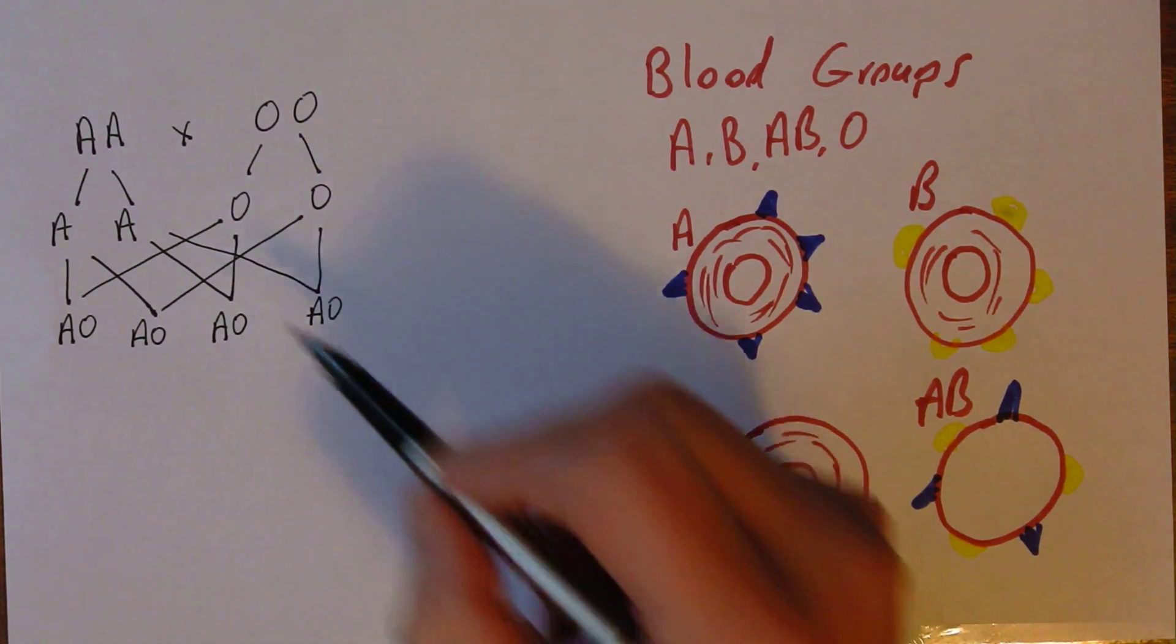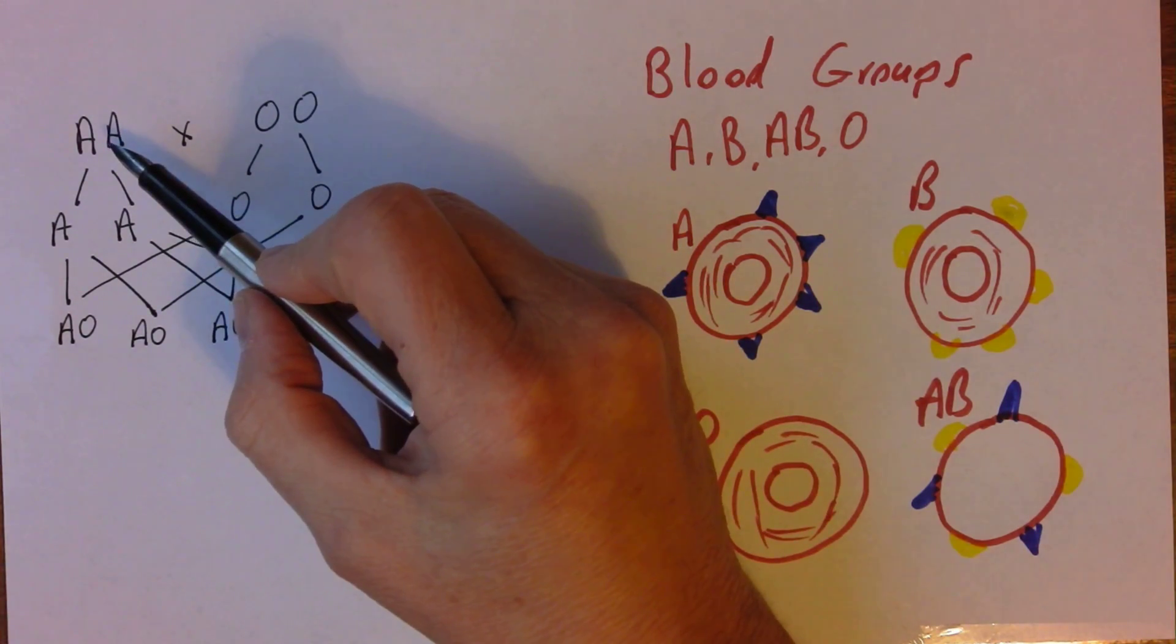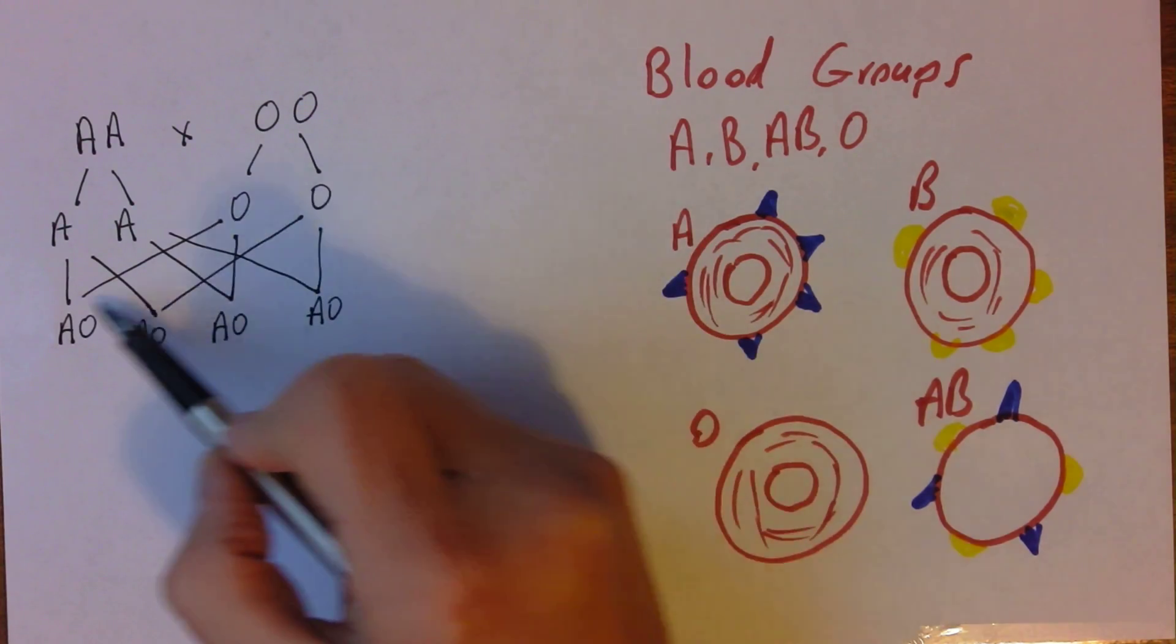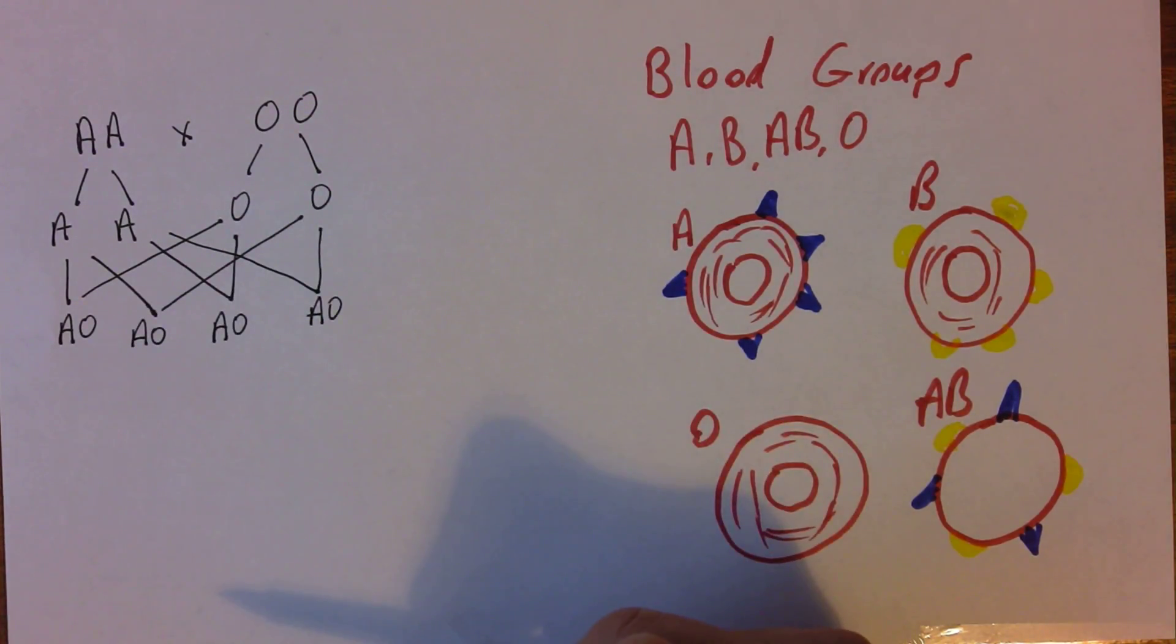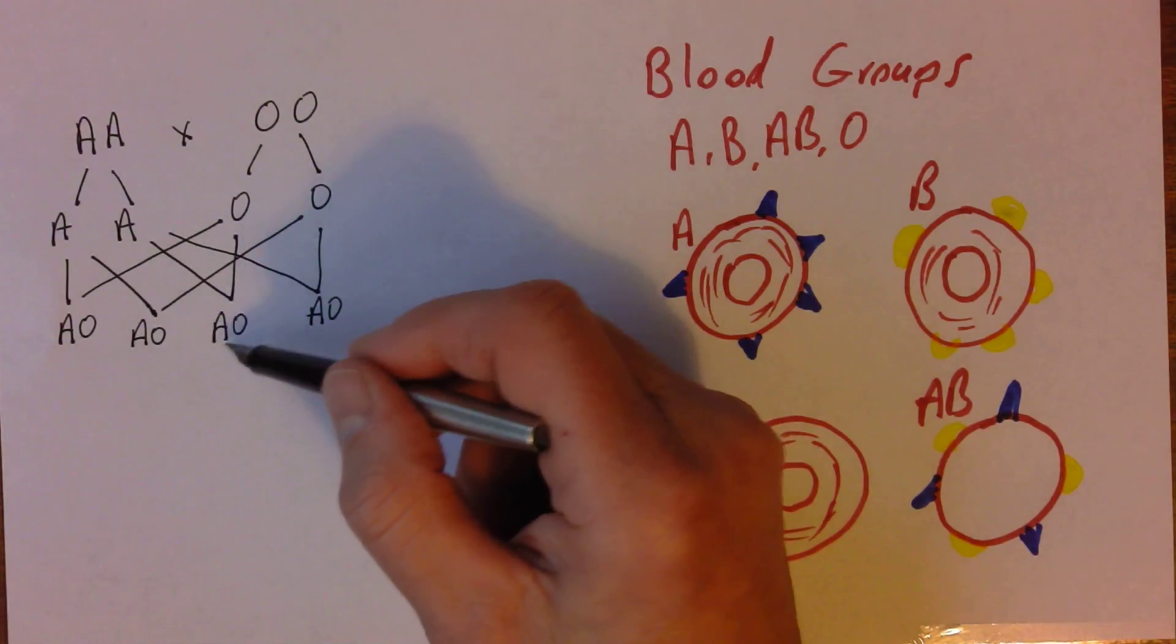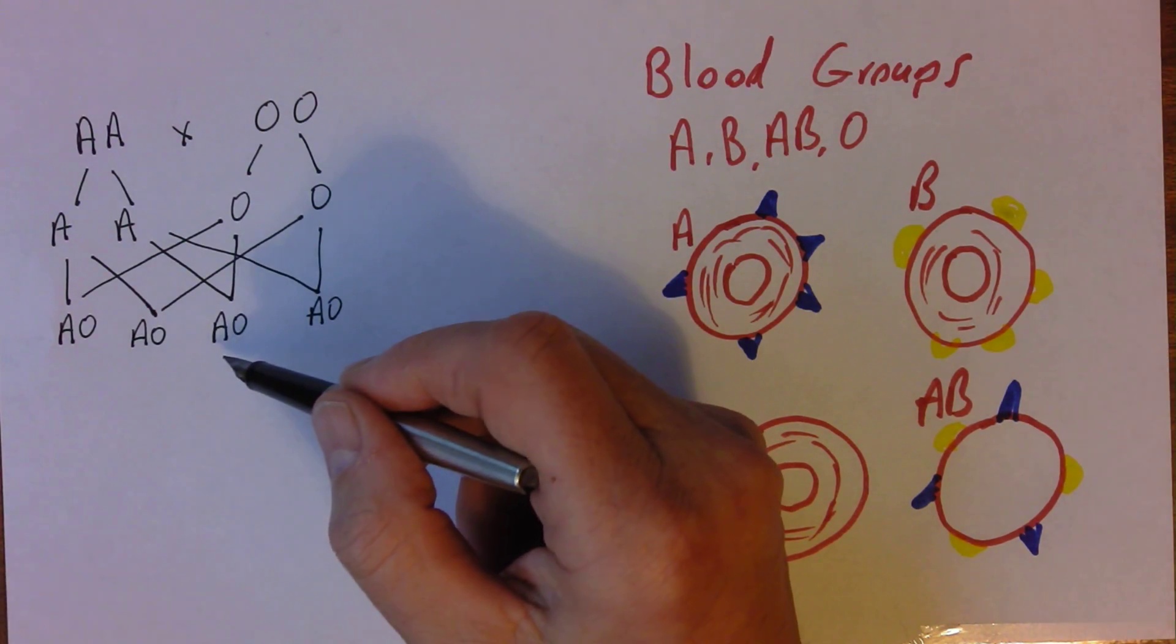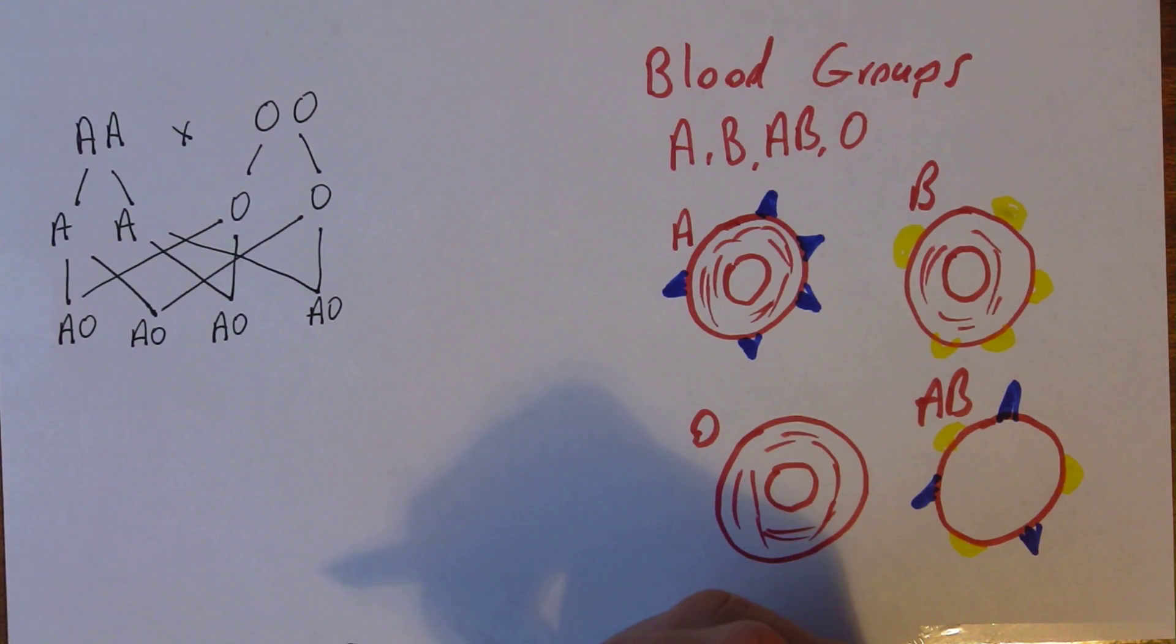So we start off with a parent who's blood group A and a parent who's blood group O. And in this case, all of the possible offspring would be blood group A. But of course they're all heterozygous for the allele, they're AO, so they could potentially carry the O blood group onto the next generation.